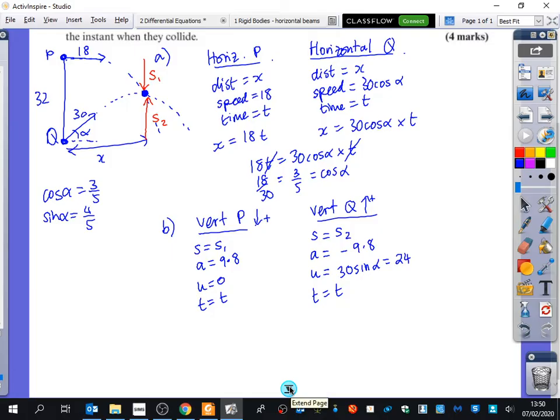So I'm going to set up a couple of S equals UT plus a half A T squared. So I get S1 equals 0 plus 4.9 T squared. I'm then going to get that S2 equals UT, which is 24T, plus a half A T squared, which is minus 4.9 T squared. I've done that correctly.